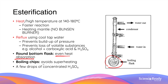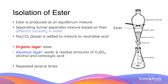Boiling chips are used to avoid a phenomenon called superheating. Superheating occurs when the mixture is heated above its boiling point but no boiling occurs. While it may seem beneficial for the substances to remain in liquid form, a superheated solution can suddenly boil at any time, causing a violent phenomenon called flash boiling. Thus, boiling chips are used as a safety measure to prevent superheating from happening. Since esterification is a reversible reaction, the mixture at the end of the reaction will always be a mixture of ester, the reactants, and sulfuric acid.